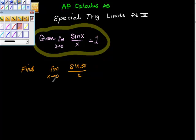find the limit as x goes to 0 of sine 3x over x. What I'm going to do here is just a little bit of arithmetic. Remember, we're going to multiply by 1. So here's my 3 over 3.